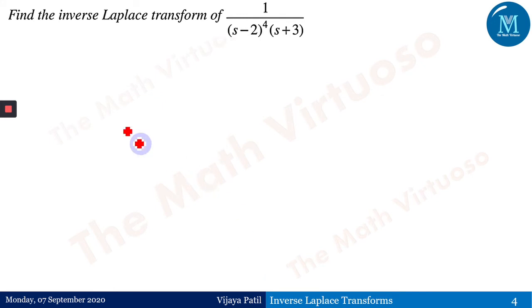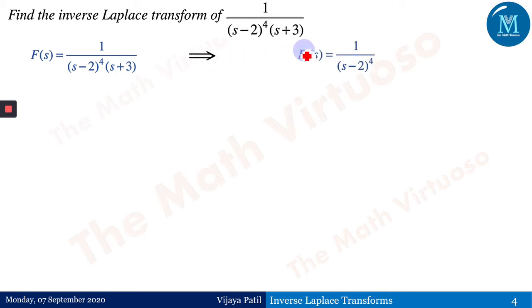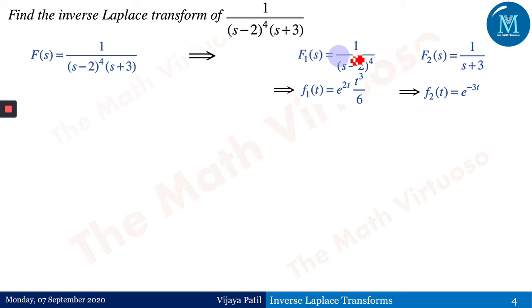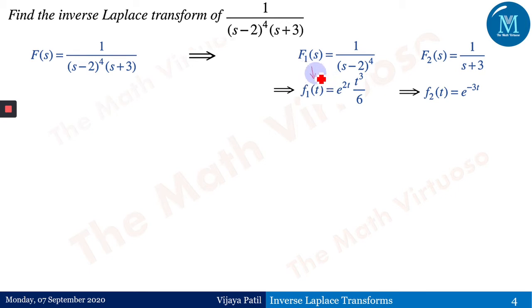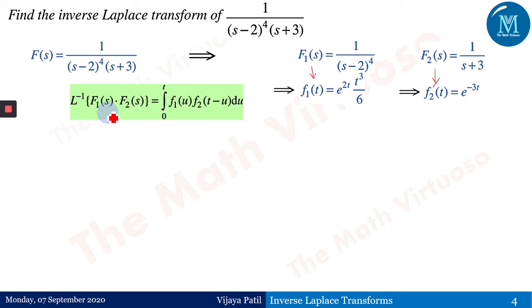Next: find the inverse Laplace transform of 1/((s−2)⁴(s+3)). We choose F1 and F2 so their inverses are easy to find. F1 = 1/(s−2)⁴, so f1 = e^(2t)·t³/6. F2 = 1/(s+3), so f2 = e^(−3t). Applying the convolution formula: the integral from 0 to t of e^(2u)·u³/6 times e^(−3(t−u)) du.